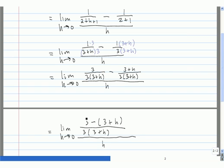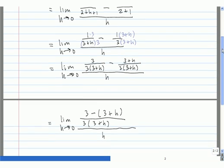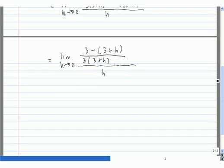Now we clean up the numerator. 3 - 3 - h simplifies to -h, divided by 3(3+h), and all of that divided by h.